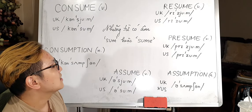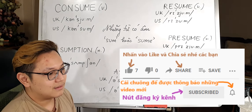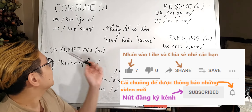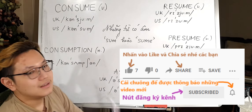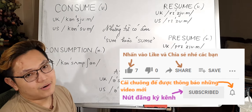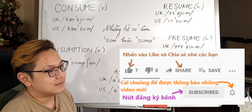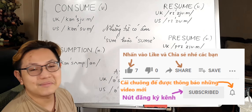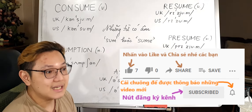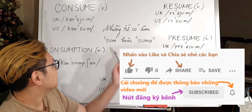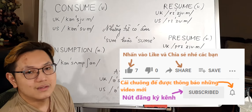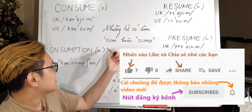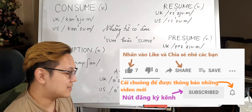First thing first: there are many words with U in them, but they are not all pronounced in the same way. Có rất là nhiều cái từ có chữ U trong đó nhưng mà nó không được phát âm cùng một cách. In this video, I'm only focusing on SUM, SUME, or similar pattern words.